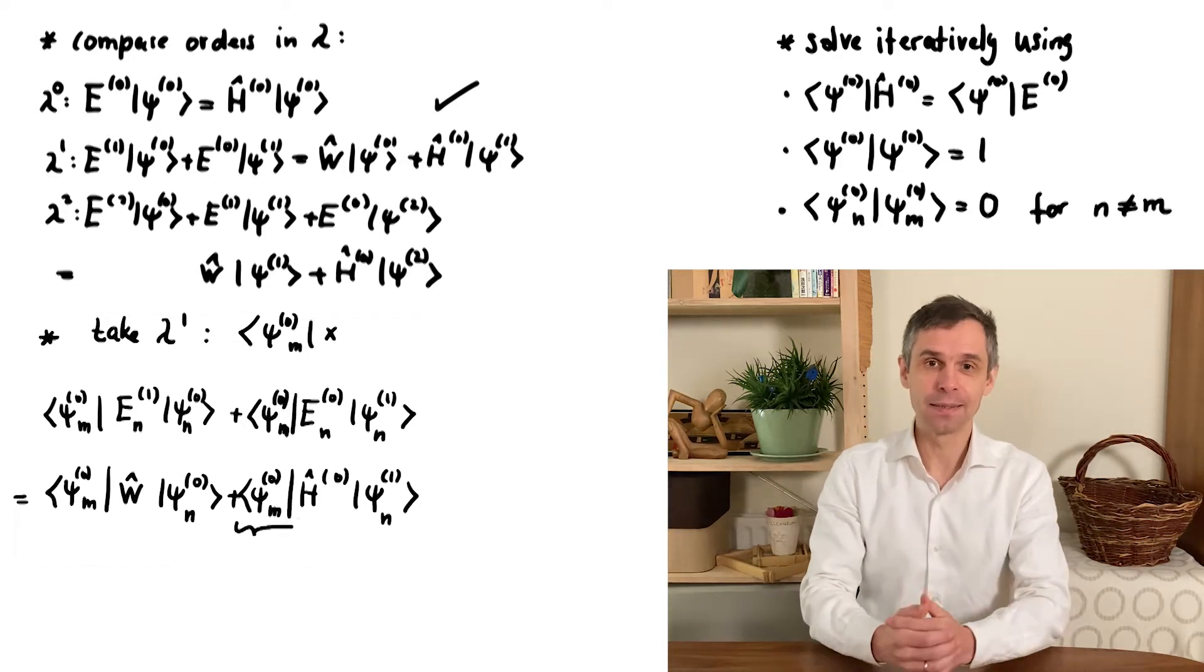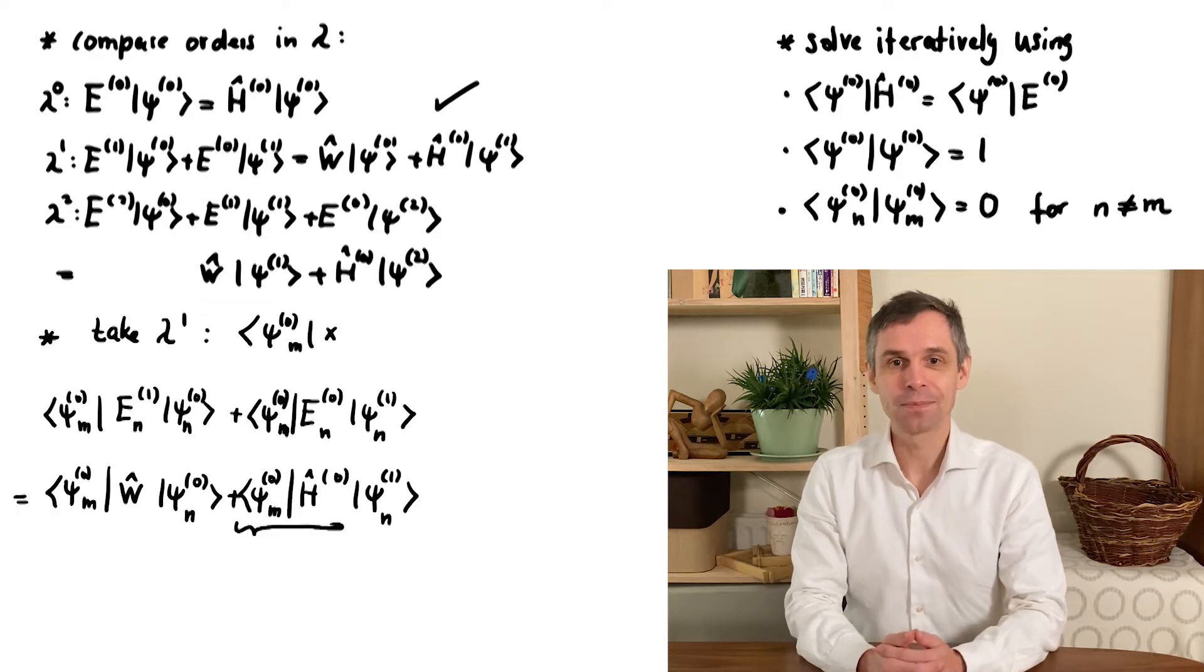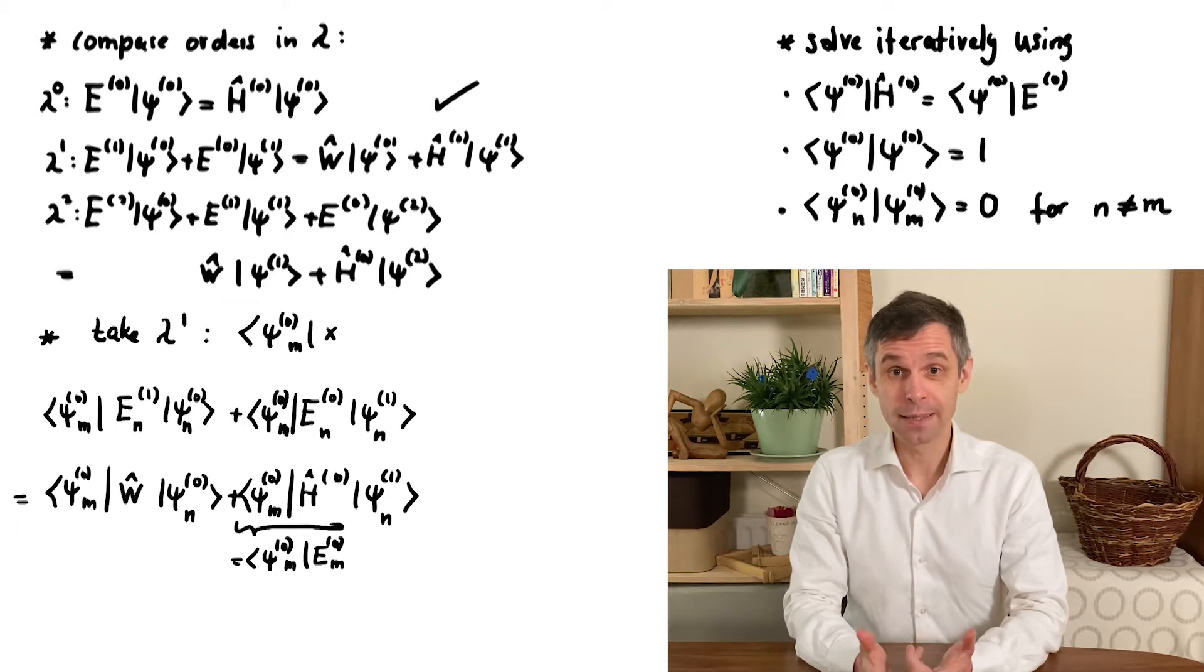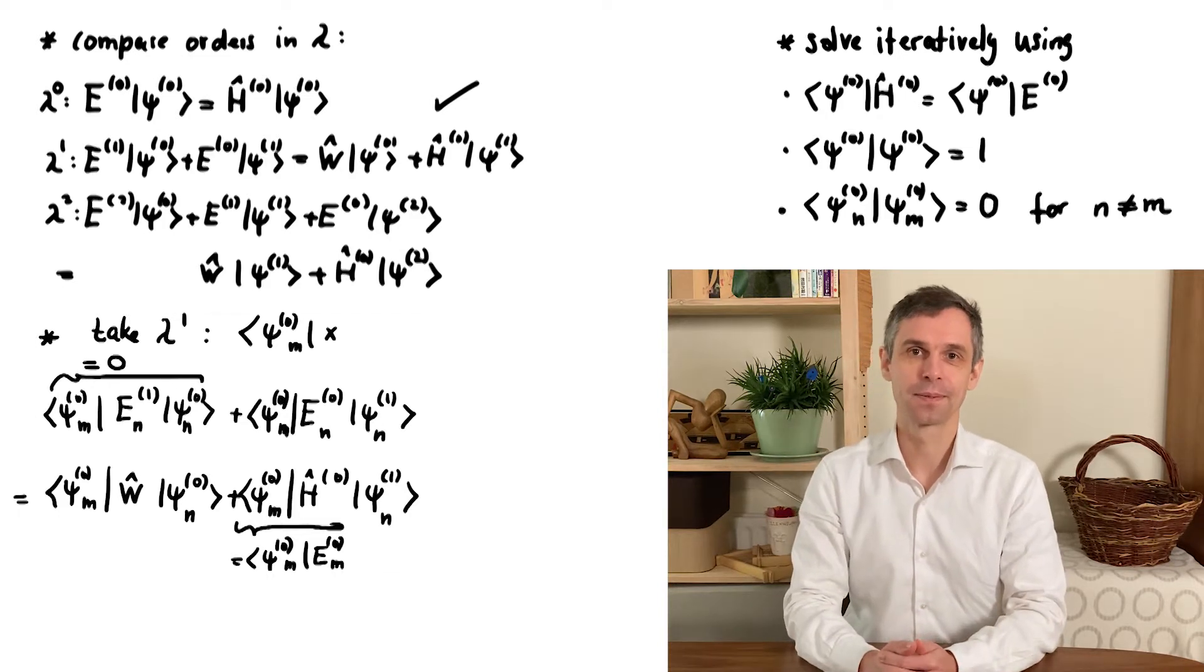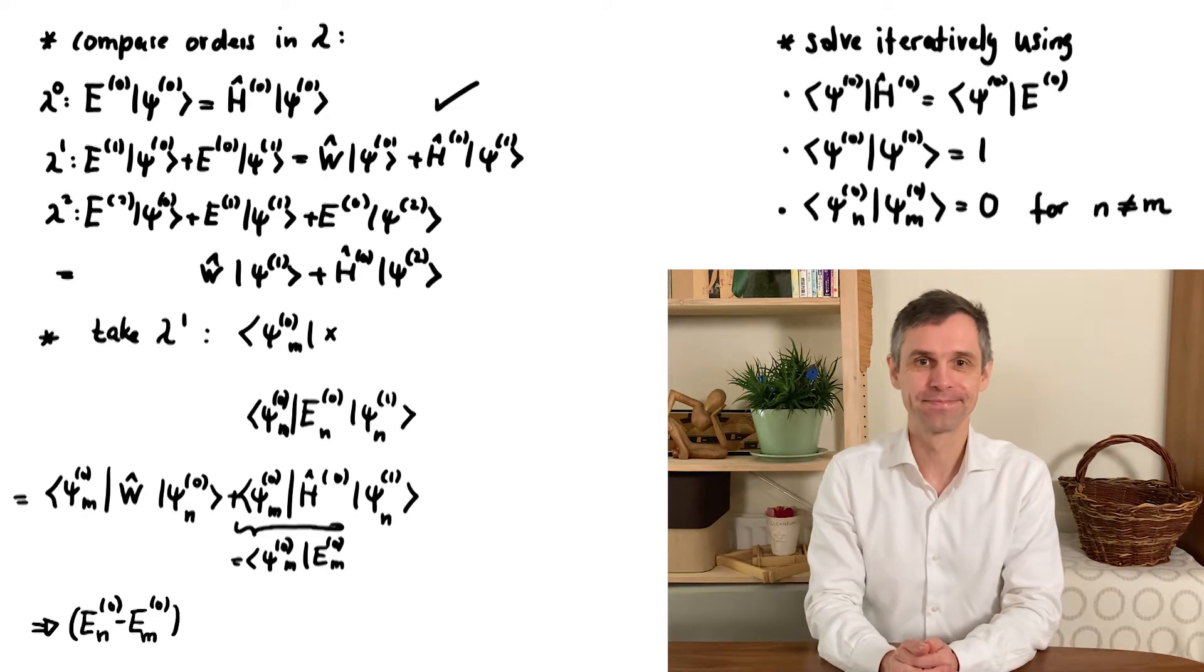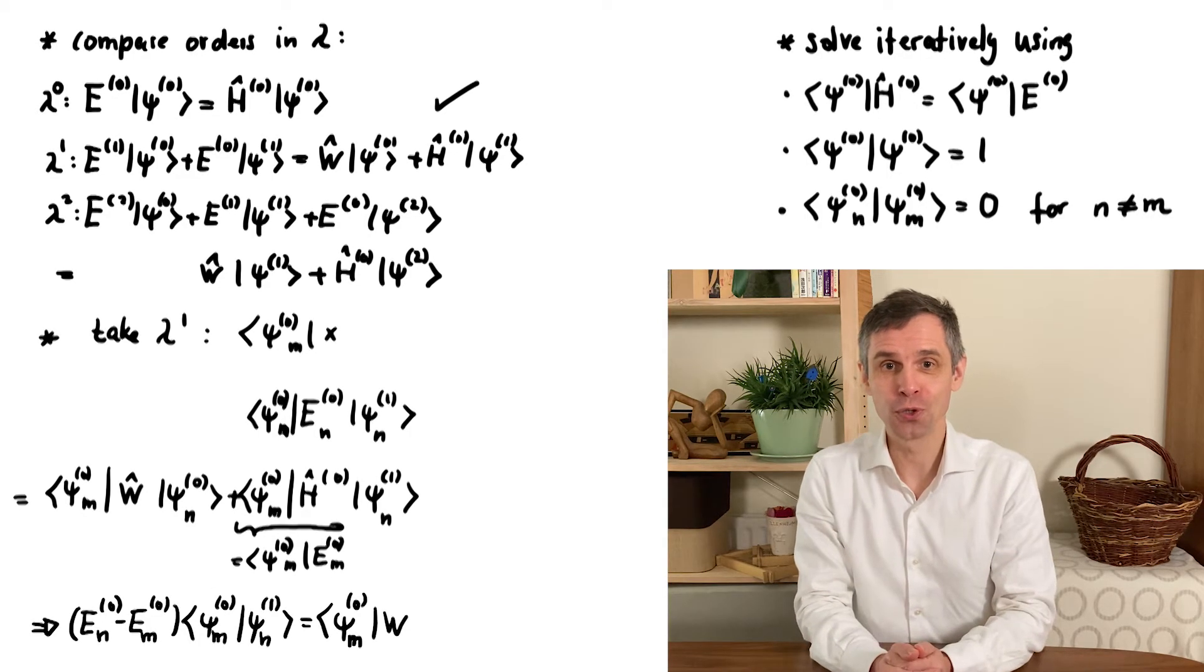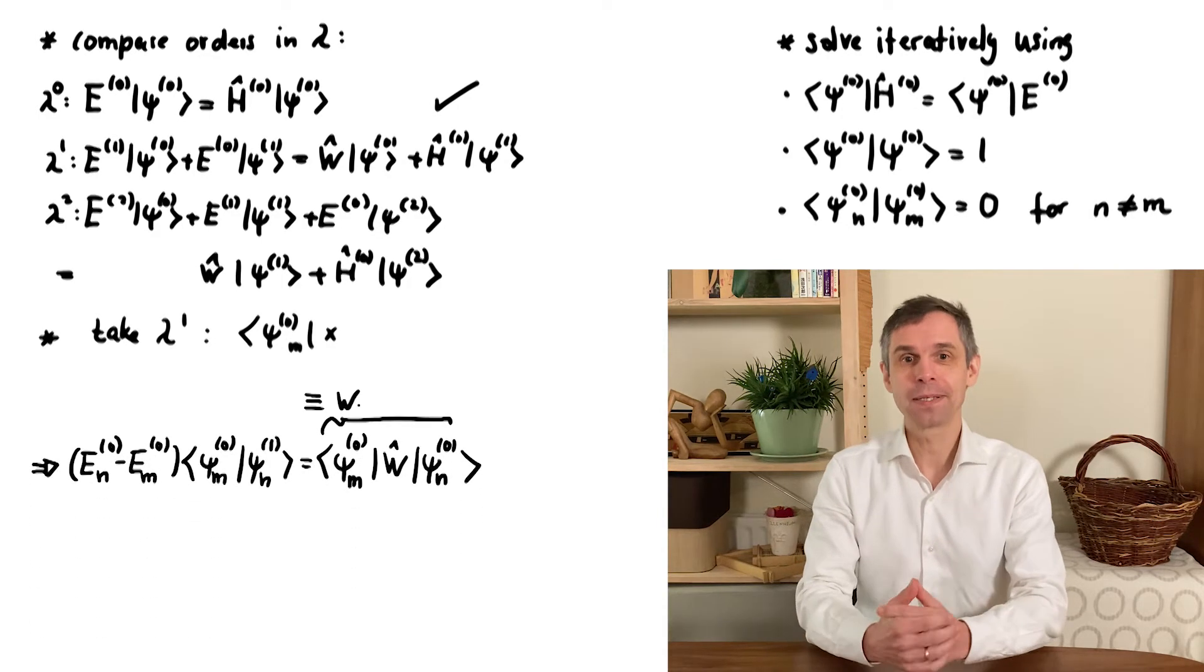As before, we can identify here a term that is just containing the Schrödinger equation for the dual state, but this term now just not just cancels because it involves a generally different energy. Instead we can use the orthogonality of the eigenstates to cancel the indicated term. We can rearrange this as shown, and to keep things manageable we introduced a shorthand notation for the terms involving the perturbation. These terms are known as the matrix elements of the perturbation.